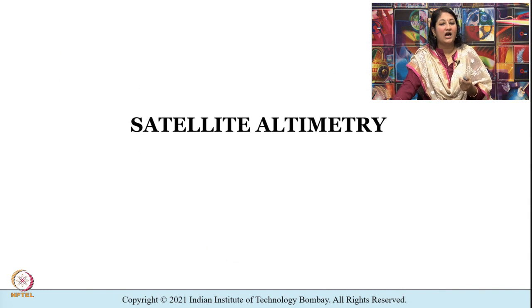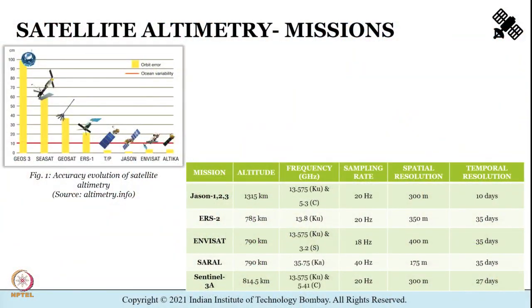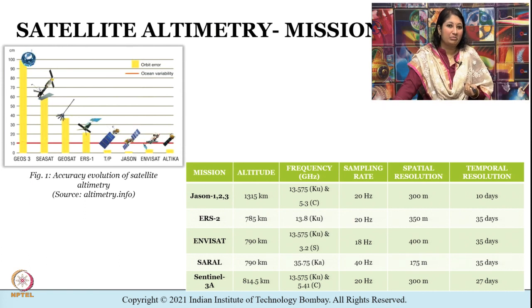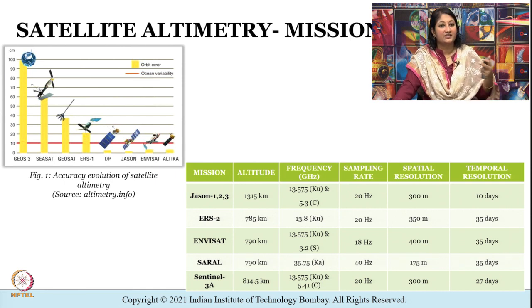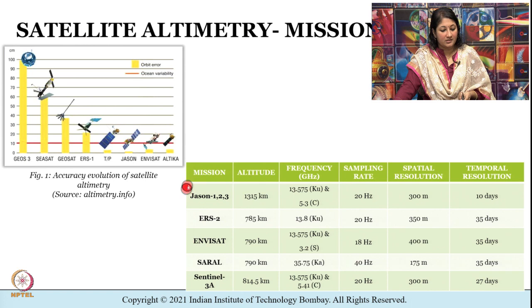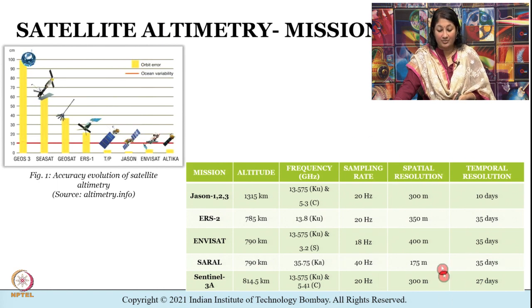Now that we have seen how to deal with GRACE data in Python, let us move to the next topic: satellite altimetry. The history of satellite altimetry started in the late 1960s and has seen missions like TOPEX/Poseidon, Jason 1, 2, and 3, Envisat, and SARAL. Shown here are the mission names, altitude, microwave frequency in gigahertz, sampling rate, spatial resolution, and temporal resolution for a few altimetry missions.